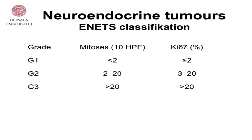This is a short overview of the ENETS classification. Grade 1 tumors have less than 2 mitoses or Ki-67 — the percentage of proliferating cells — less than or up to 2%. G2: 2 to 20 mitoses and 3 to 20%. Grade 3 tumors: more than 20% proliferating cells. There is great variability within those grades, and there have been suggestions to change the 2% limit to 5% for grade 2.